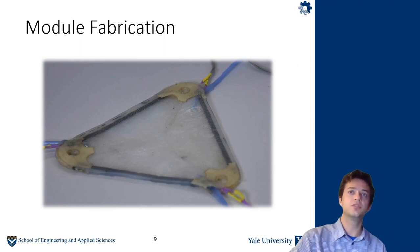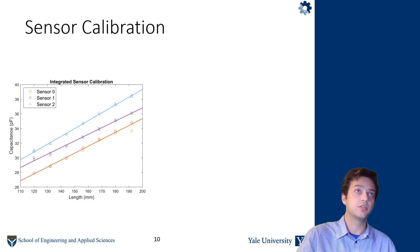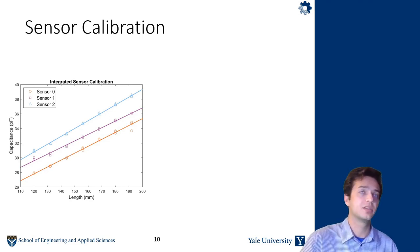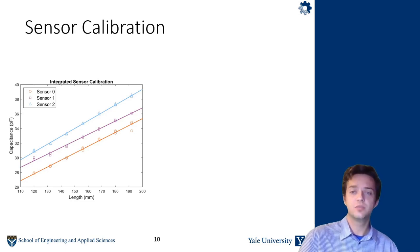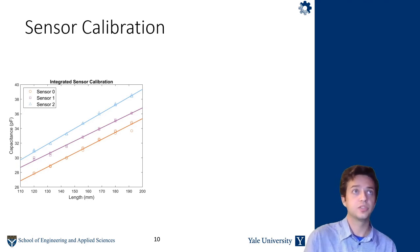So before we can actually use this robotic skin and the sensors for anything useful, we have to calibrate the sensing. So the sensor calibration process was to stretch each sensor on each skin. We had seven robotic skins in total that we used for the work, and we stretched each sensor to seven different known lengths and measured the capacitance. We used commercially available circuitry to measure the capacitance, and we repeated that three times. We had 21 data points for each sensor and three sensors per skin.